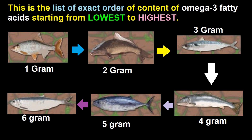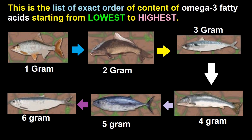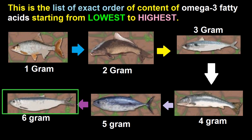The first fish in the image contains the lowest amount of omega-3 fatty acid — let's say only 1g. The second fish contains 2g, which is 1g more than the first one. The third fish contains exactly 1g more than the second fish, and similarly the 4th, 5th, and 6th are in increasing order. The last fish contains the highest amount of omega-3 fatty acid.